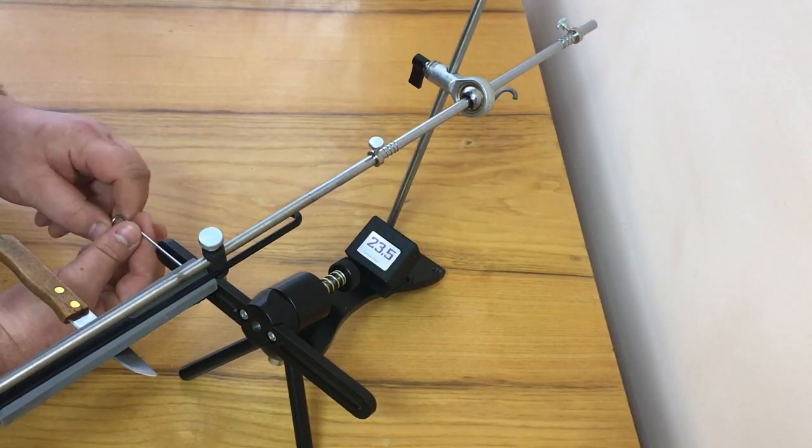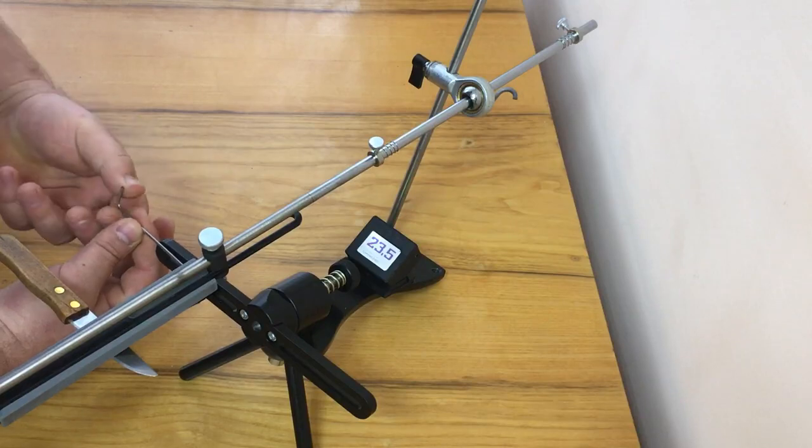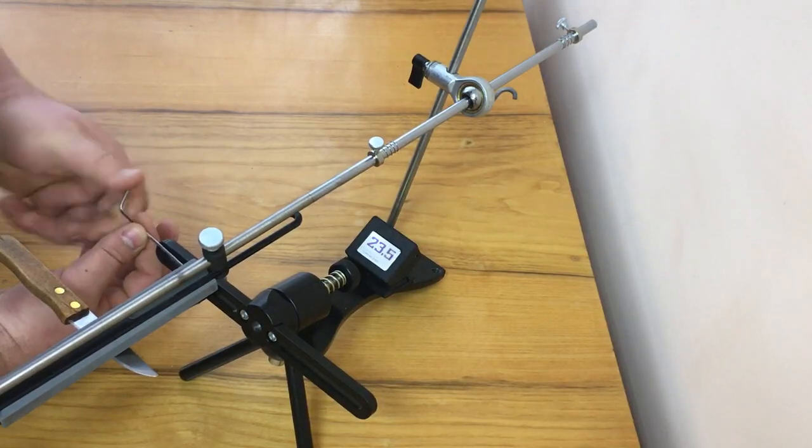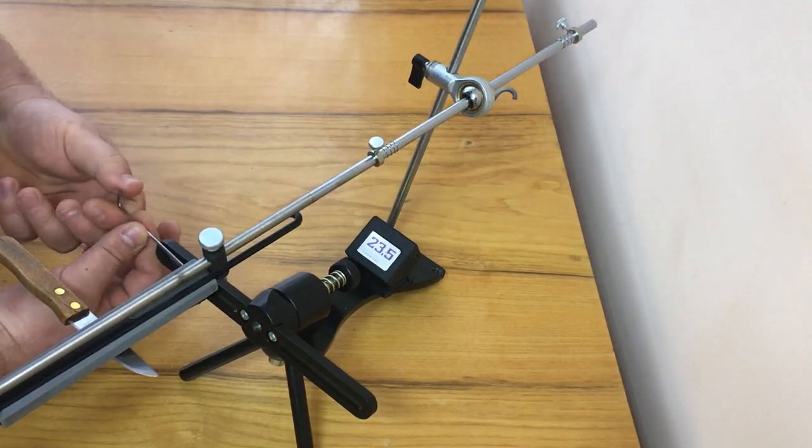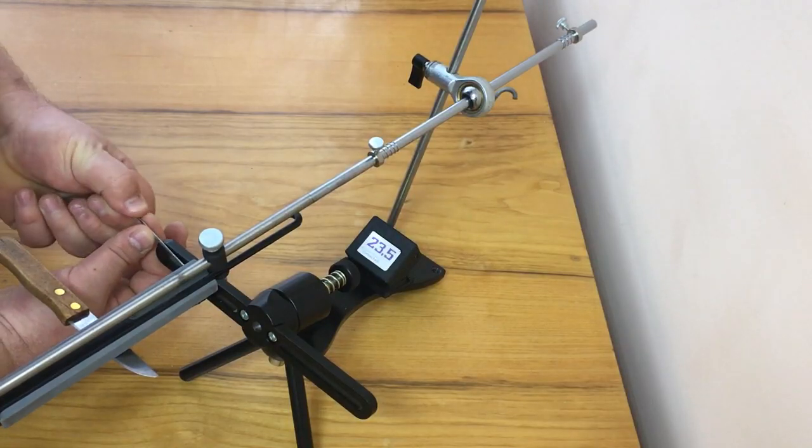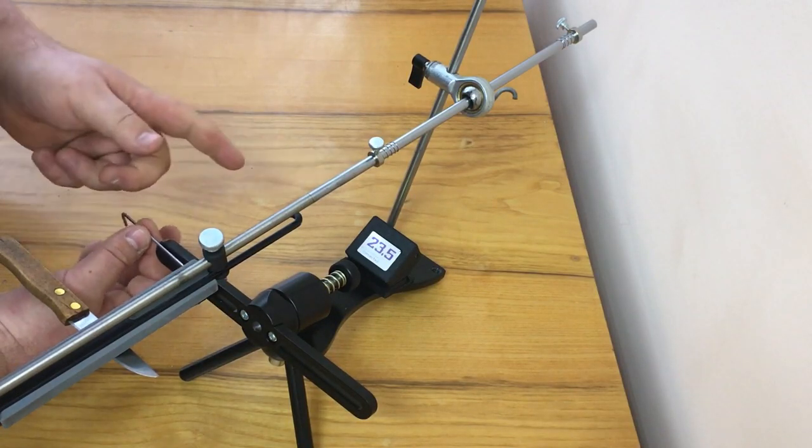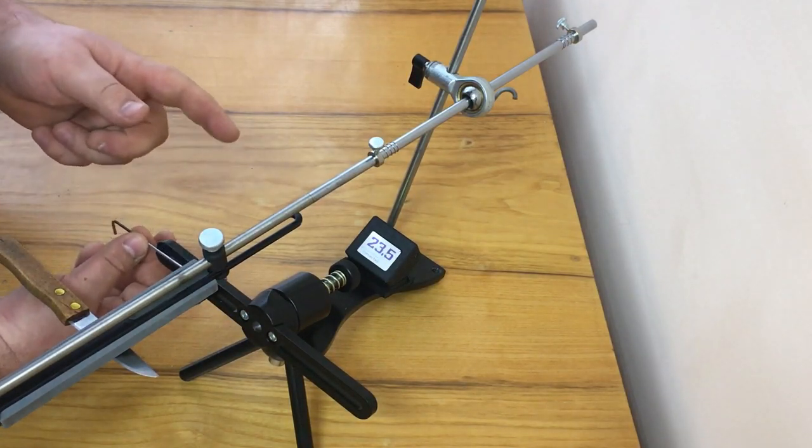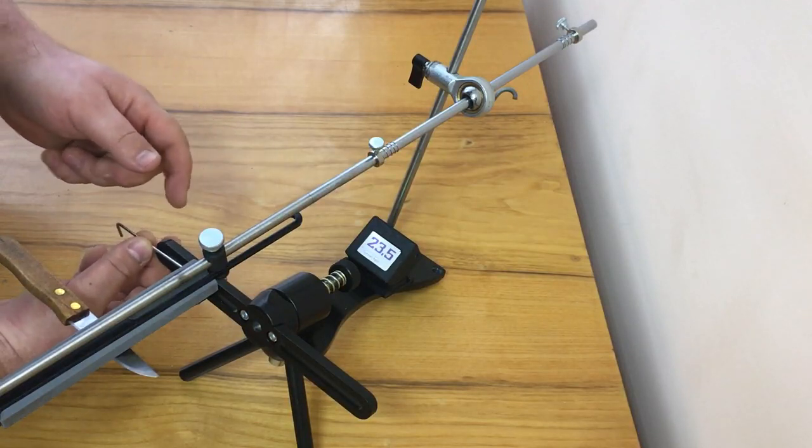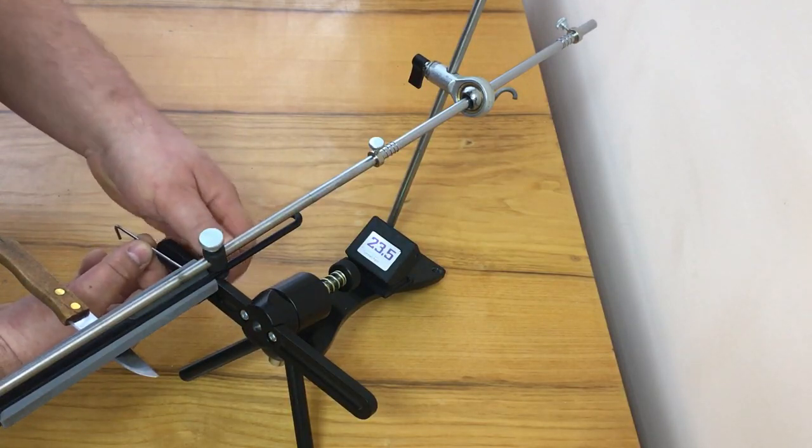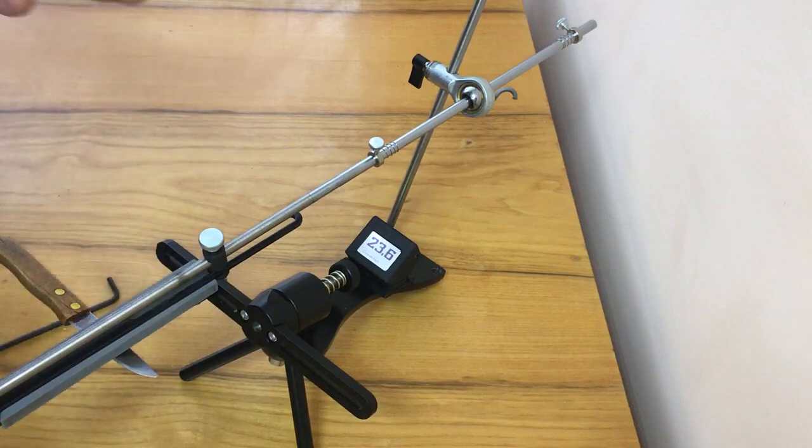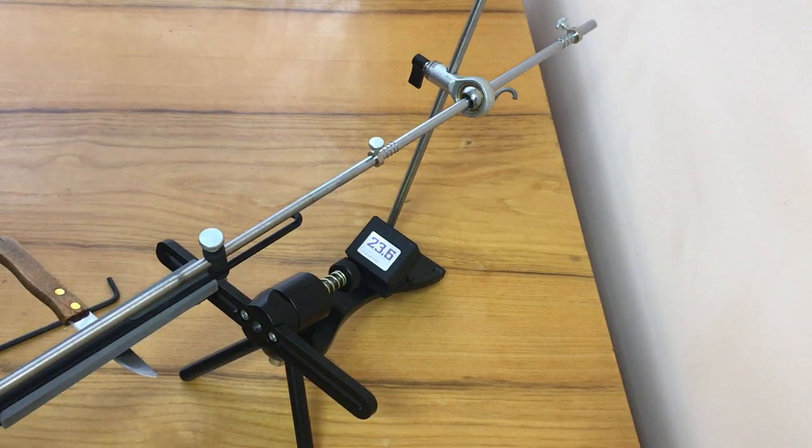We twist the screw with the hex key, screw in. The screw is located in the upper clamp. Screw in to the floor. If you remember, before this we had 23.1 degrees on the angle meter. Now we've screwed it in. Now the angle meter shows 23.5. It means we've lowered the axis of our clamp 0.4 degrees below.